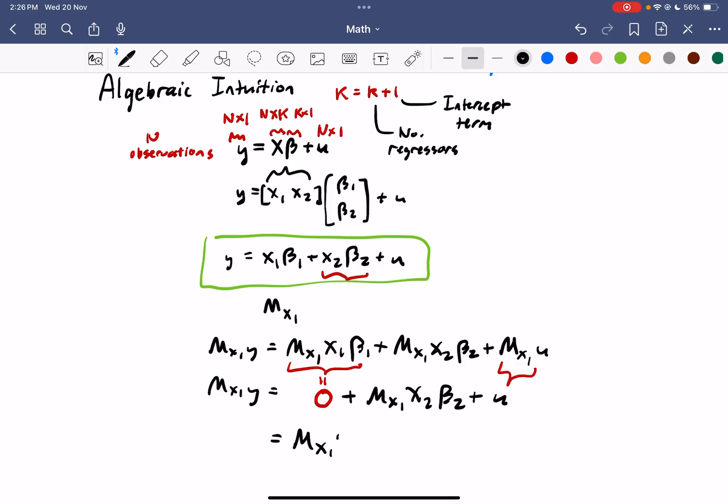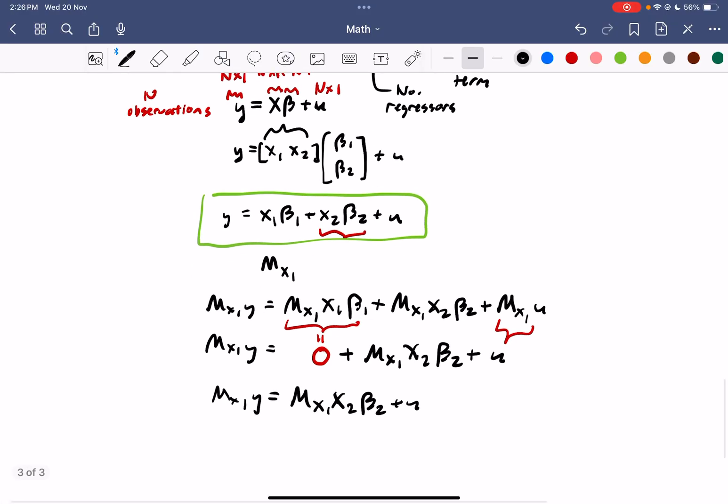So, now that we've gotten rid of the first set of regressors, we can simply just estimate beta 2 the way we normally do with an OLS estimation process.